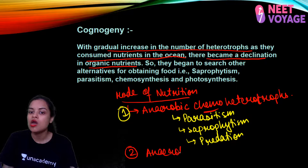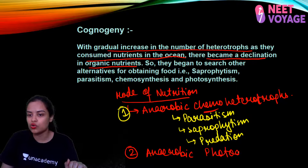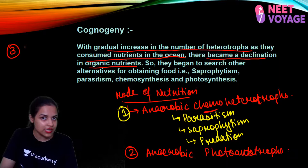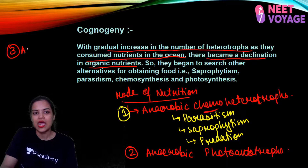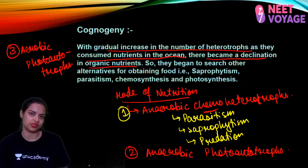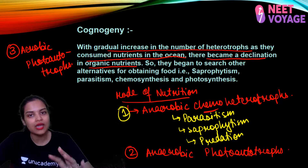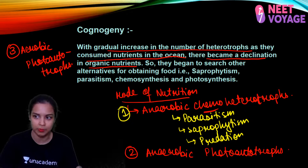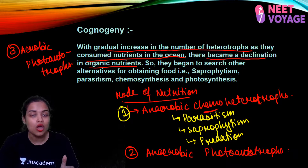As a second development, organisms started synthesizing their own food, but still under anaerobic conditions because it was a reducing atmosphere with no free oxygen. So we got anaerobic photo-autotrophs. Then gradually as the environment and atmosphere of earth changed, with an oxidizing environment and free oxygen available, we got aerobic photo-autotrophs. Today most organisms you see are aerobic photo-autotrophs — they came last. First came the chemo-heterotrophs.